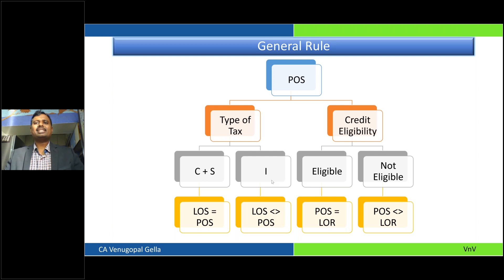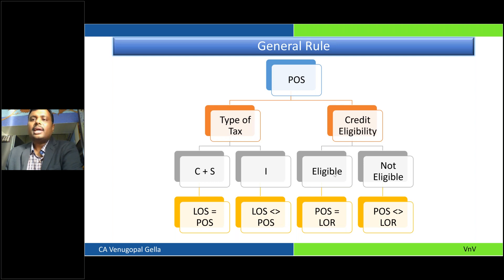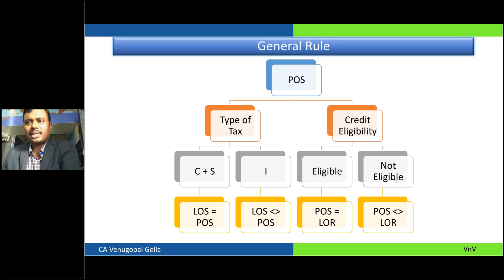If the place of supply is not the same as the location of the recipient, that credit would not be eligible for that recipient. Technically, there would be a distinct person in that state who would be eligible for the credits. There is also an important provision: in the event of doubt, if you have charged IGST but it is eventually held that it should be CGST plus SGST, you would claim a refund of IGST and pay the CGST/SGST. Similar provisions exist in Section 77 of CGST Act and Section 19 of IGST Act — and there is no interest for such transactions.